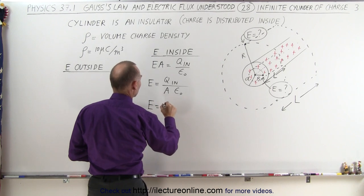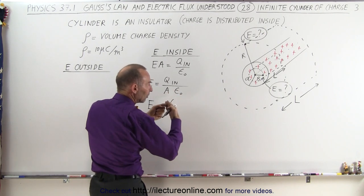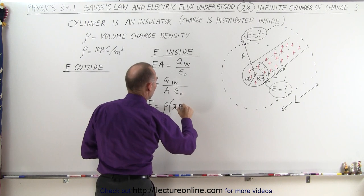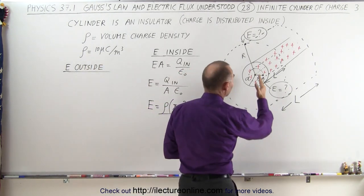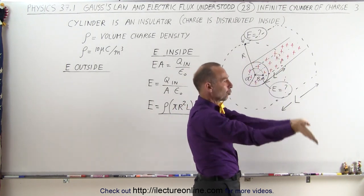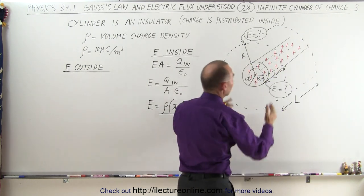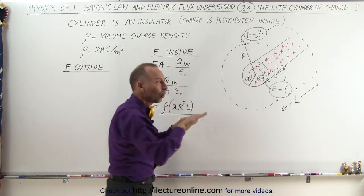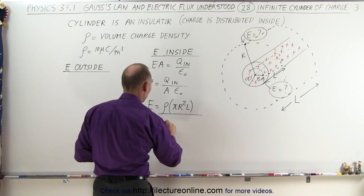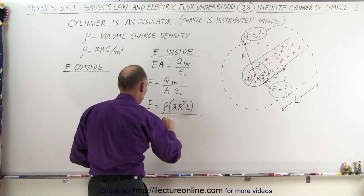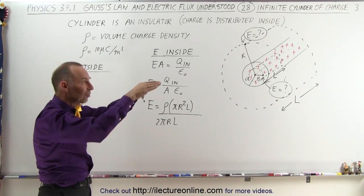E equals the volume charge density times the volume, which is the area of the end of the cylinder times the length — so that's pi r squared times L — and then we divide by the area of the Gaussian surface. The electric field emanates through the sides in a radial direction, not through the ends, because we assume an infinite cylinder. So we only care about the side of the Gaussian surface: the circumference 2 pi r times the length L — that's the area of the side of the cylinder, not the two ends.